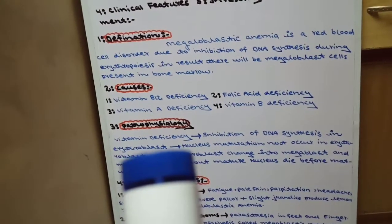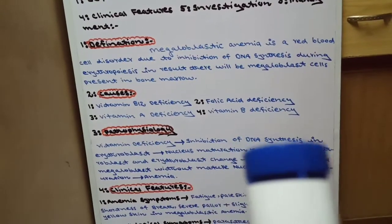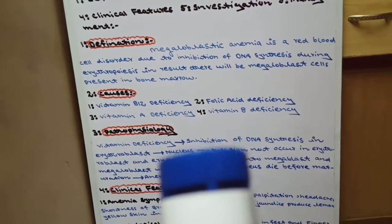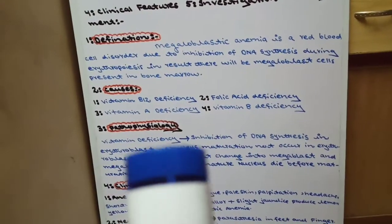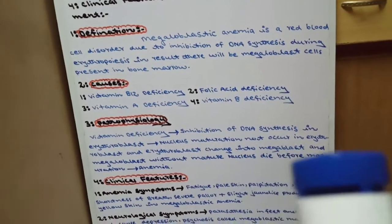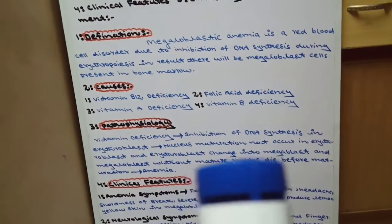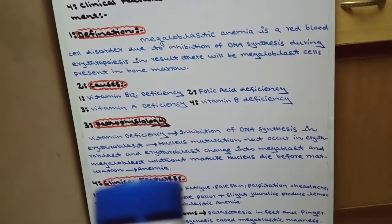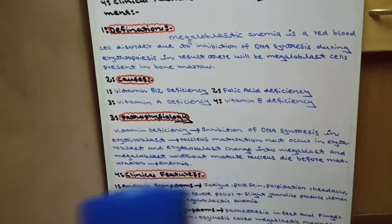Pathophysiology summary: Vitamin deficiency → inhibition of DNA synthesis in erythroblast → nucleus maturation does not occur in erythroblast → erythroblast changes into megaloblast → megaloblast without mature nucleus dies before maturation → result will be anemia. Yeh hai iska pathophysiology.